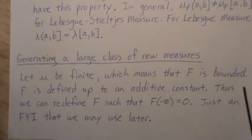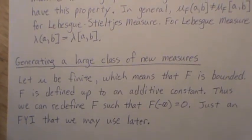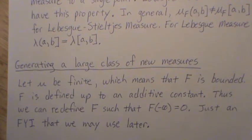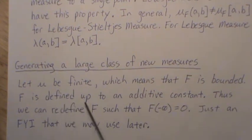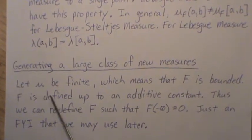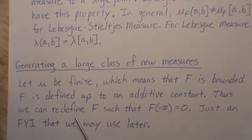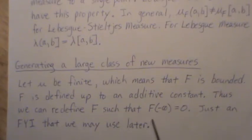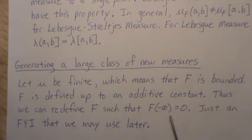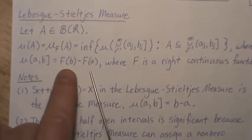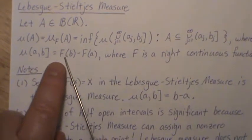Now we're going to illustrate how to generate a large class of new measures. Let μ be finite, which means that F is bounded. So μ is the Lebesgue-Stieltjes measure, F is the distribution function. F is defined up to an additive constant, thus we can define F such that F(-∞) = 0.